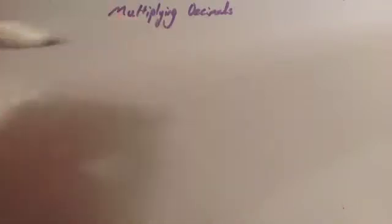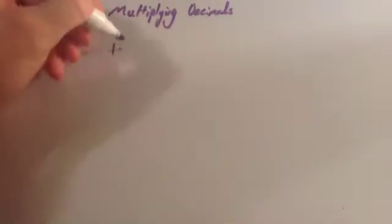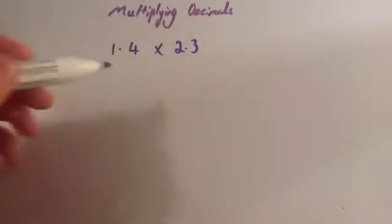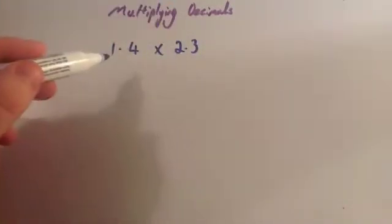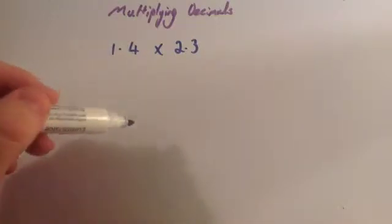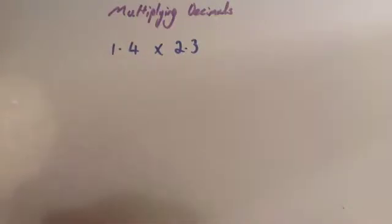In this video we're going to look at multiplying decimal numbers. To multiply decimal numbers, for instance 1.4 multiplied by 2.3, what you do is you first of all ignore the decimal points, multiply those numbers, and then put the decimal point back in. Let me show you how that's done.